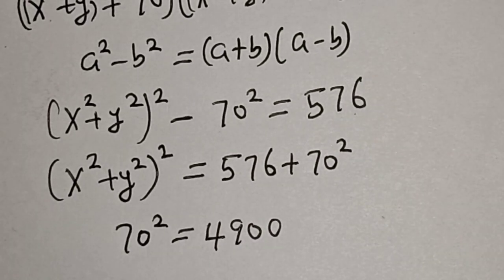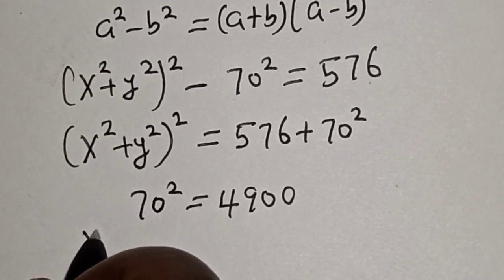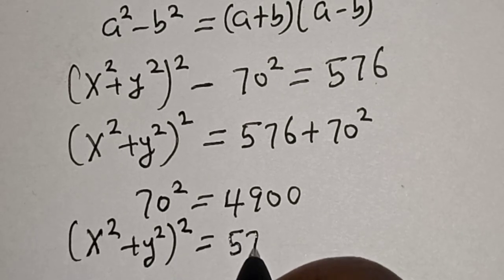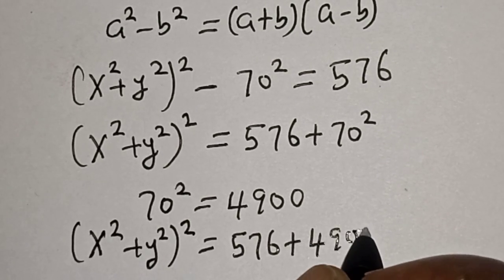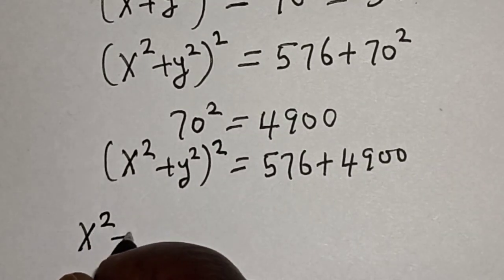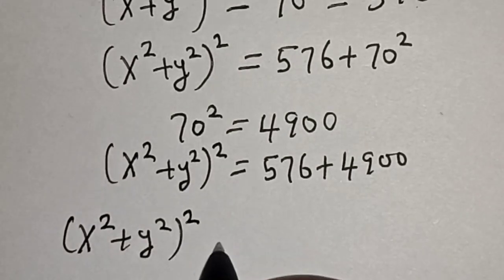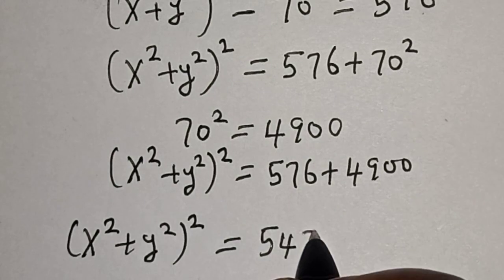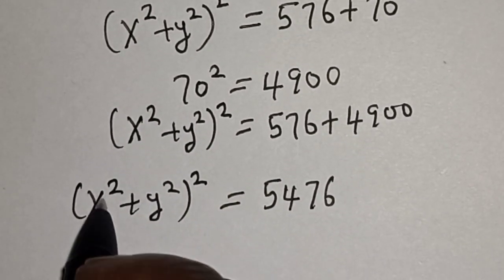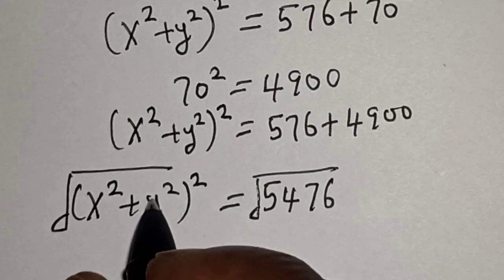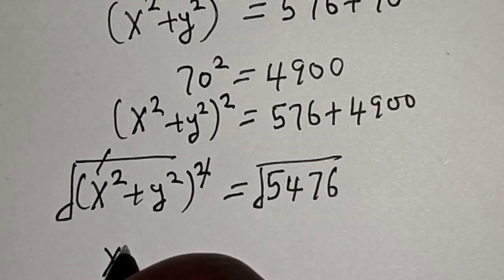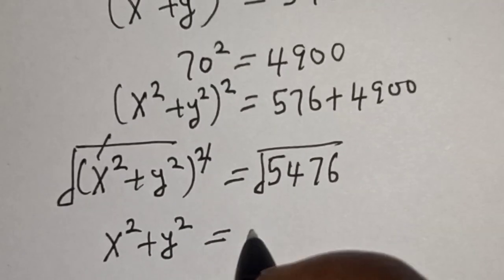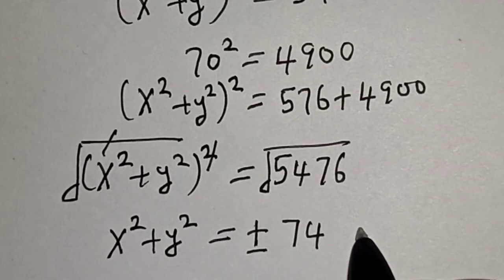Substituting, we have (x squared plus y squared)² equals 576 plus 4,900, which equals 5,476. Now let's take the square root of both sides. The square root cancels the square, so x squared plus y squared equals the square root of 5,476, which is plus or minus 74. Let's call this equation star.